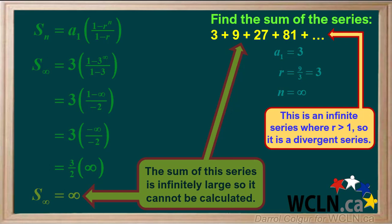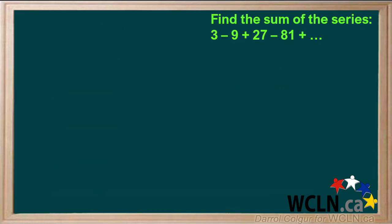Remember, this is an infinite series where r is greater than 1, so it is a divergent series. Now let's see what happens when we try to calculate the sum of a geometric series where r is less than negative 1.